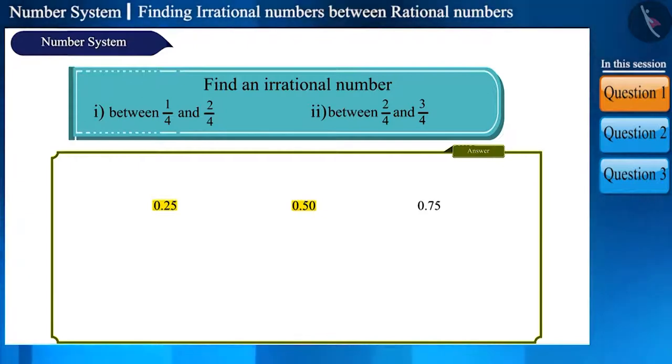Now, we have to find one irrational number between 0.25 and 0.50 and one between 0.50 and 0.75. This is quite easy. There is a big difference between the two numbers. You can write irrational numbers starting from 0.3 or 0.6 in this manner.